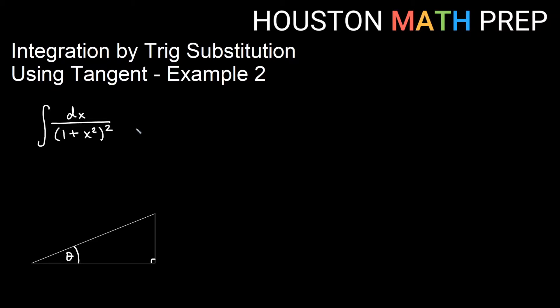If it weren't for the square on the bottom outside, we would just have a tangent definition, but here we have to see this as a² + u². Here a is 1 obviously and u is x.